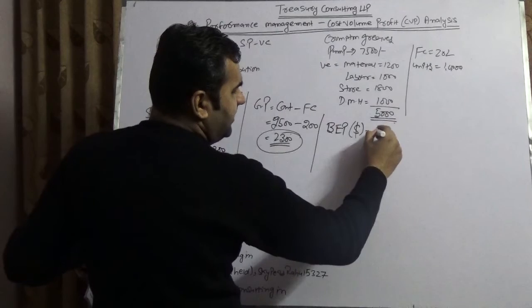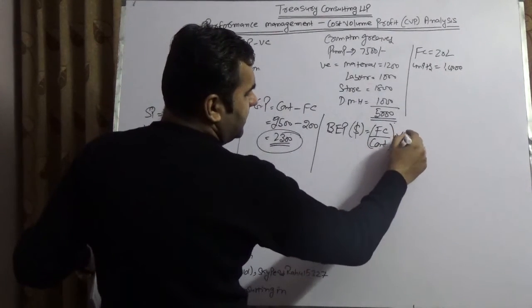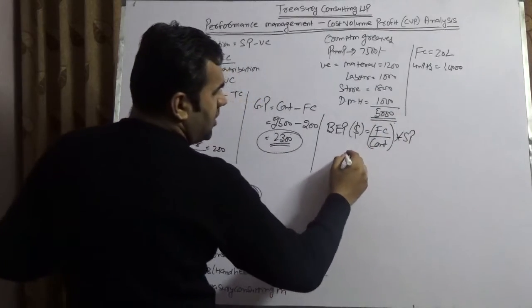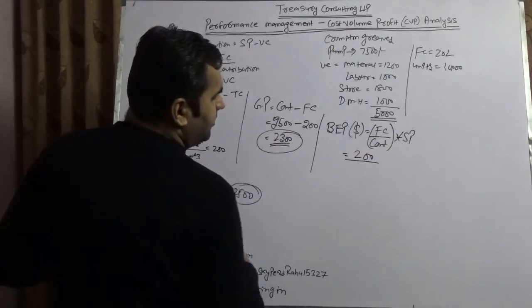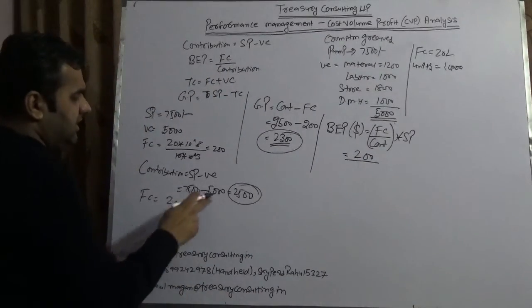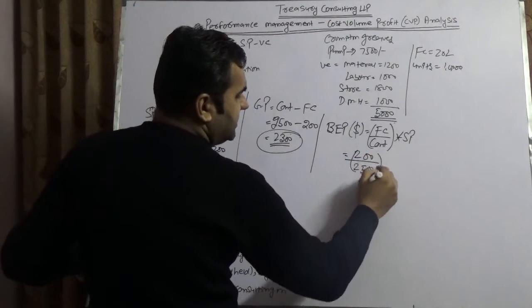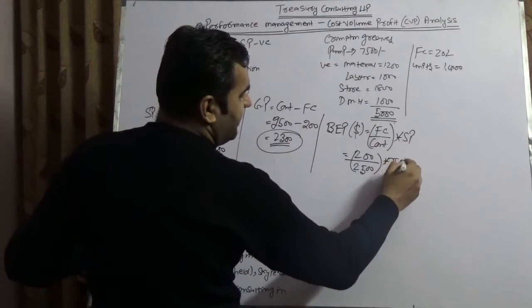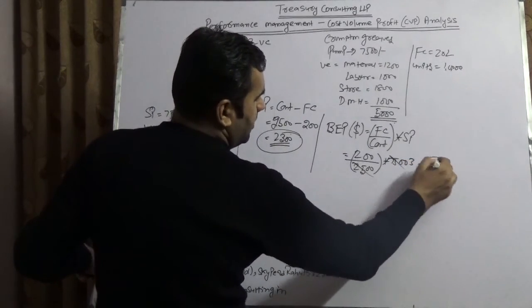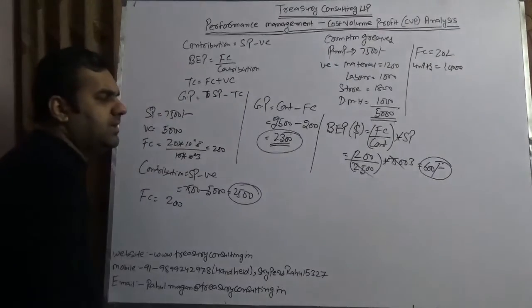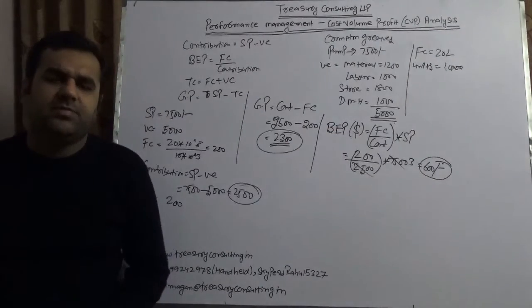Let me calculate the dollar first. The formula remains the same: Fixed cost by contribution, but here it would be multiplied by selling price. Fixed cost would be $200 per unit, contribution would be $2,500, times selling price $7,500, which is $600. This means if Crompton Greaves can do a sale of just $600, they would achieve breakeven.